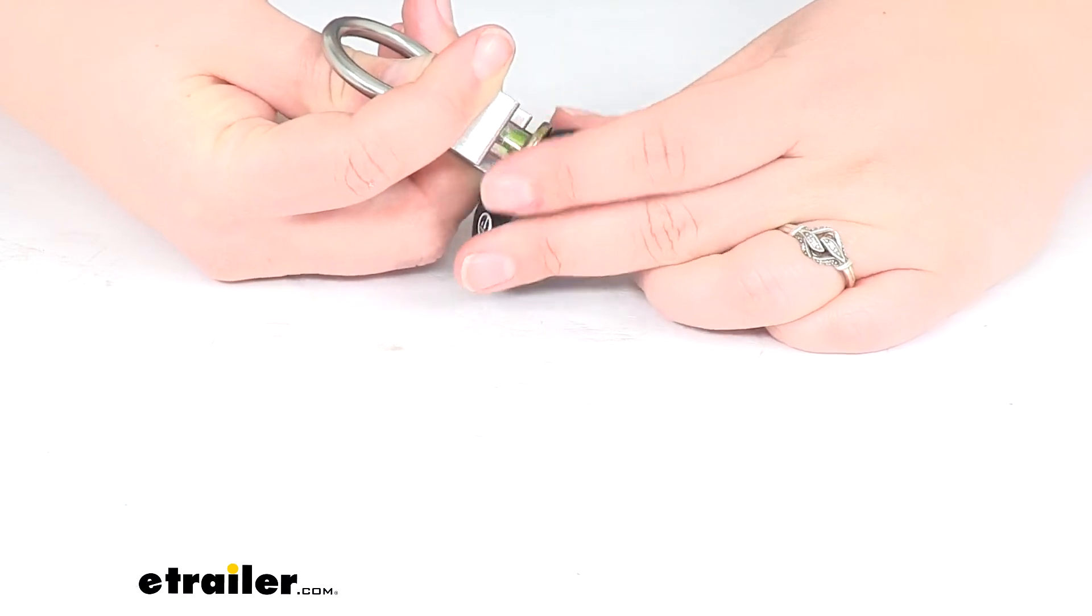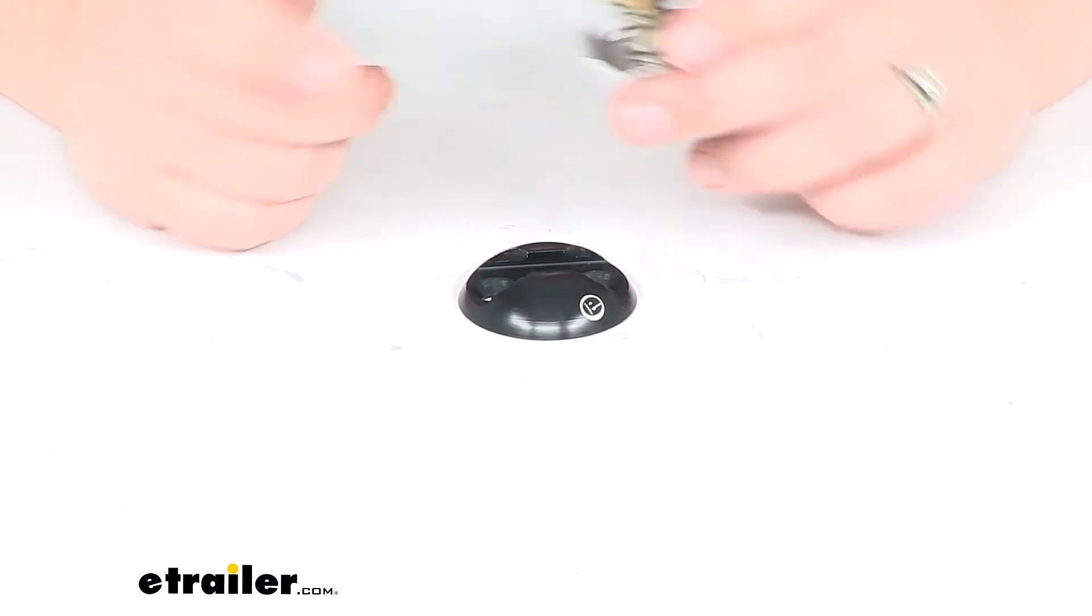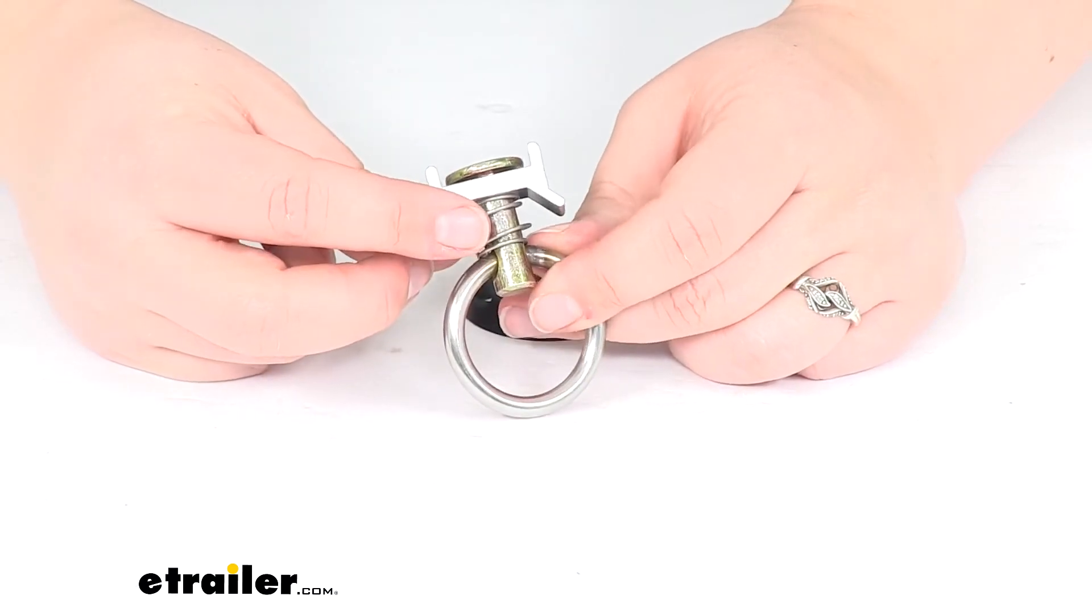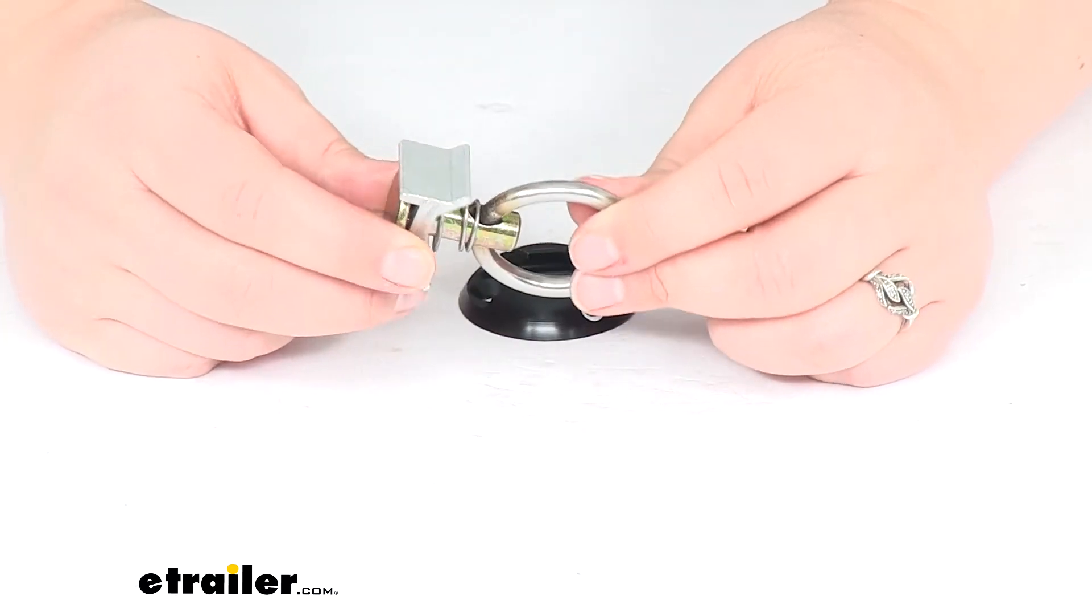You can also use this with longer lengths of L-Track, which are sold separately, as is this attachment point. You can find these here at eTrailer.com. This is one that's available from Torax.